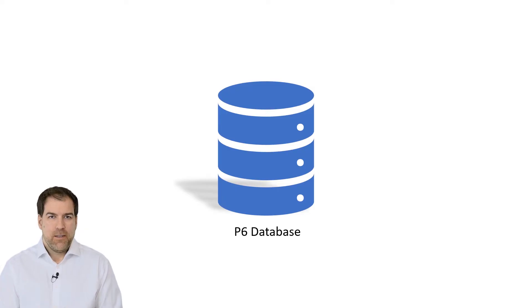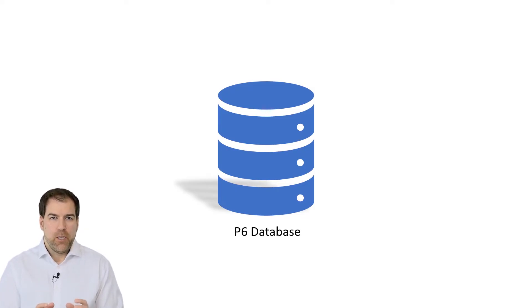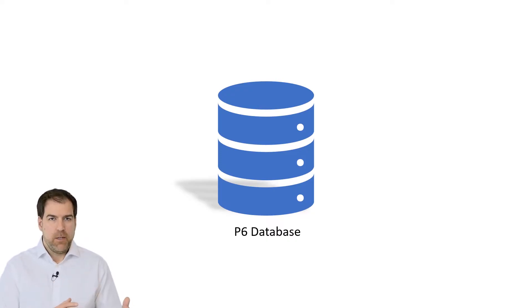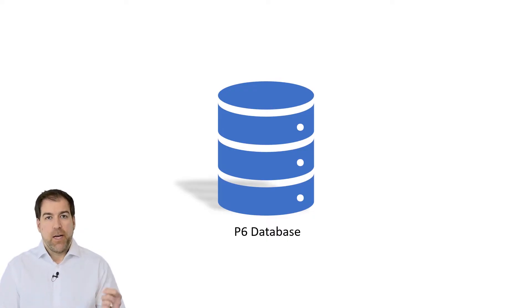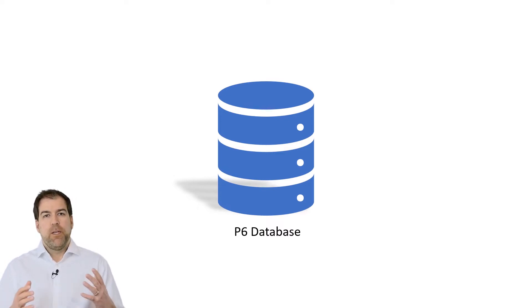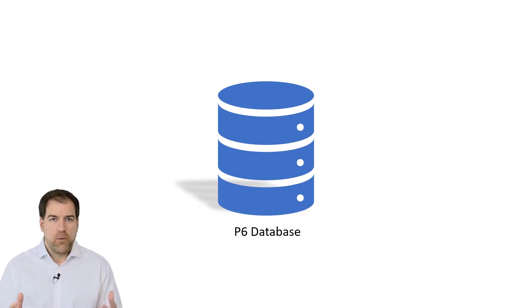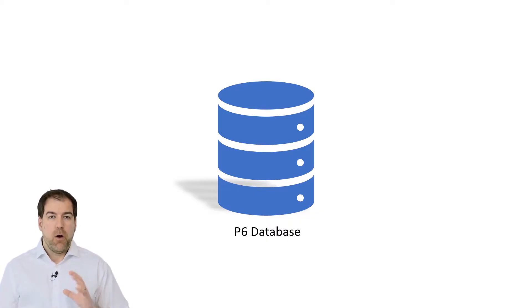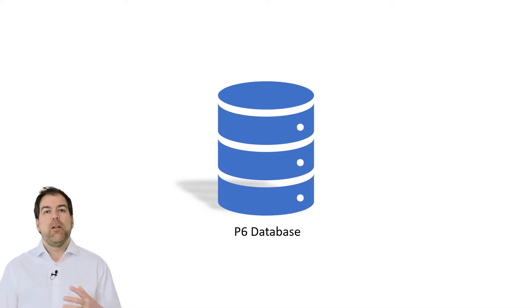The P6 database. One of the things that used to be a big differentiator for Primavera P6 in the market was that it had a database at its core. You didn't have files — you didn't do file, open, save to file. Having a database at its core really made Primavera P6 an enterprise tool. It was a single source of data for a company. They could put all of their projects in one place, and it allowed collaboration.